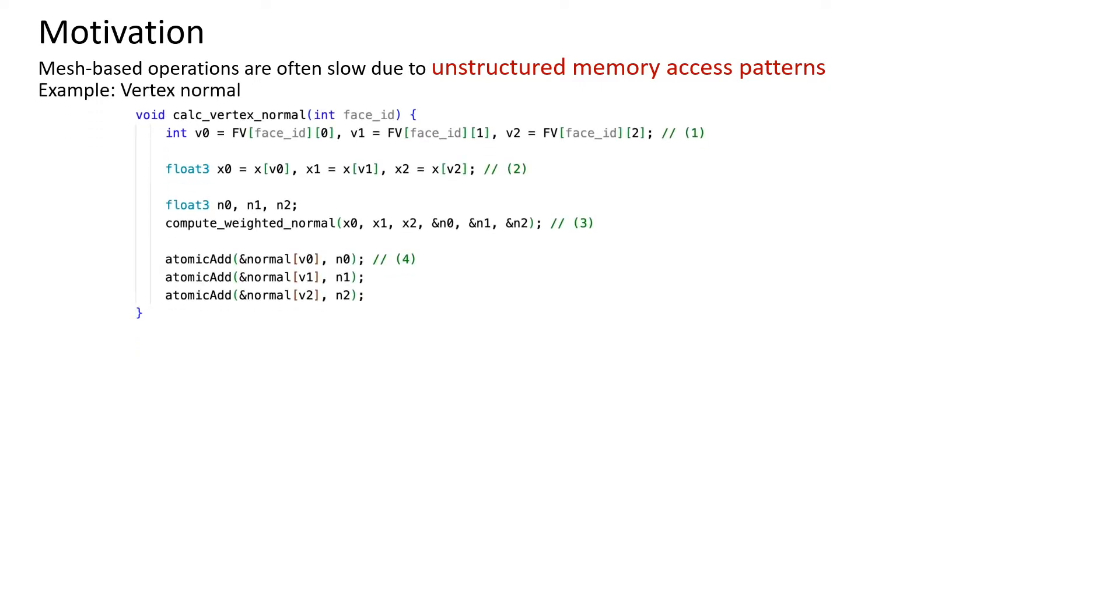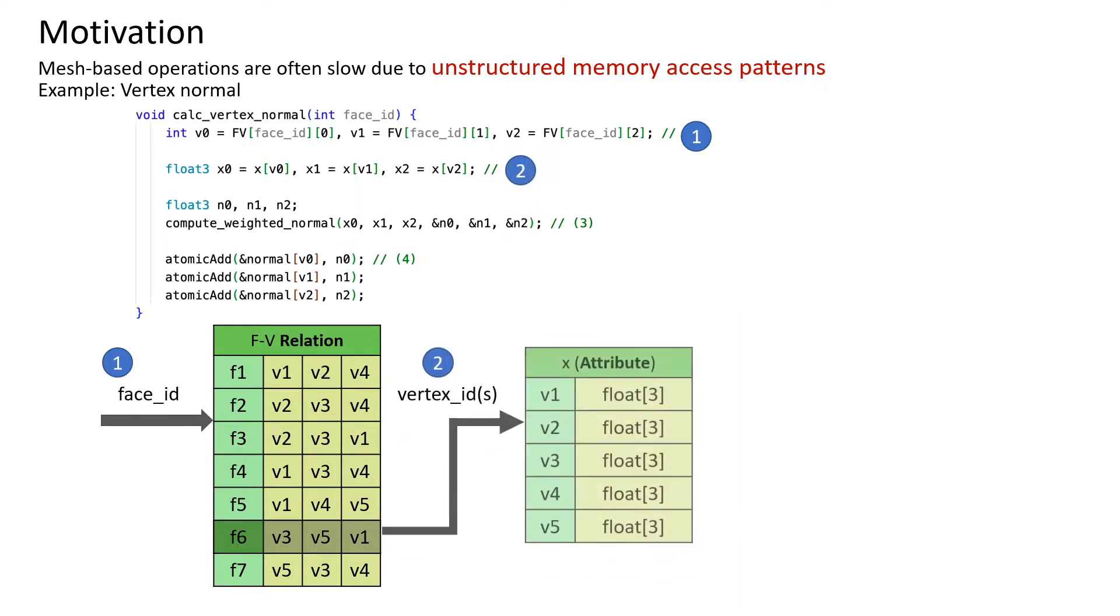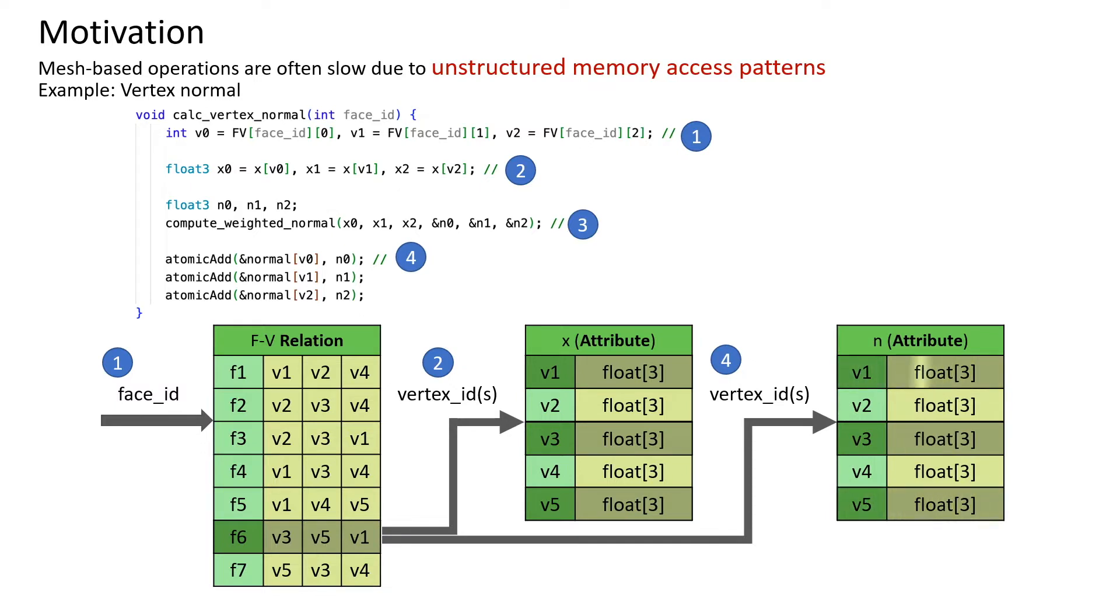For example, in a simple function to compute the vertex normal directions for a surface mesh, we need to first look up three indices of a certain triangle in a relation table, then load the vertex position attributes from the position array. Once we have the position attributes, we can compute the normals, and finally, we need to write the resulted normals back to another array.